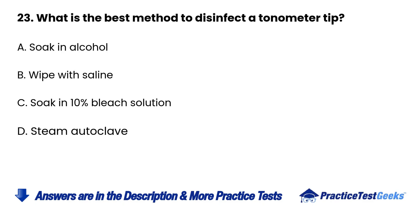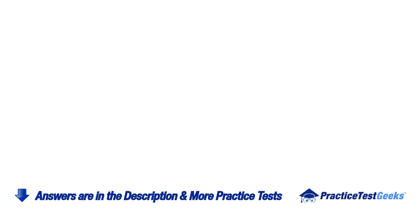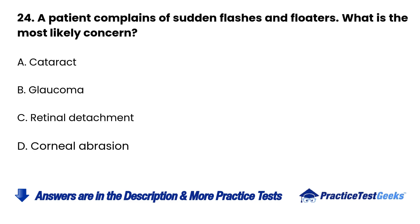23. What is the best method to disinfect a tonometer tip? A. Soak in alcohol B. Wipe with saline C. Soak in 10% bleach solution D. Steam autoclave